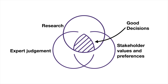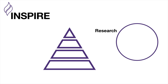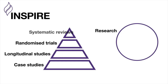We say best practice because there are lots of different types of evidence. Here are four examples, and they're arranged in what's called the hierarchy of evidence. That's because all of them are important, but the things on the top build on the ones from the bottom. A series of case studies might become a longitudinal study, which might become a randomised trial, which then a whole lot of randomised trials become a systematic review.